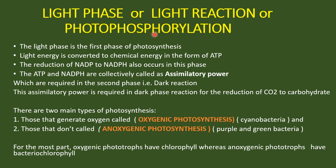The light phase is also called as light reaction or photophosphorylation. This is a fast phase of photosynthesis where light energy is being converted into chemical energy in the form of ATP. Along with ATP generation, the reduction of NADP is also occurring into the form of NADPH. Together, ATP and NADPH are collectively called as assimilatory power.